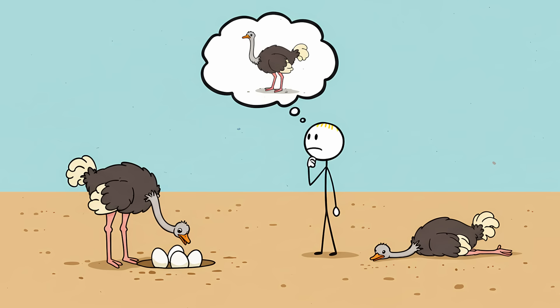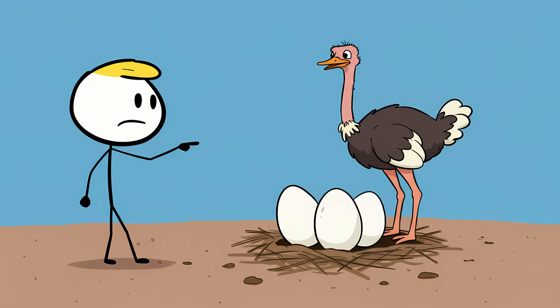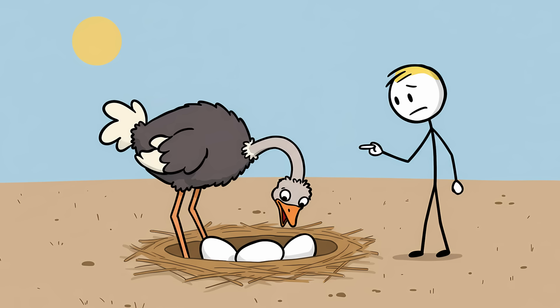The myth likely comes from a misunderstanding of a few different ostrich behaviors. Ostriches dig shallow holes in the dirt to use as nests for their eggs, which are, by the way, enormous. Several times a day, the parent ostrich will use its beak to turn the eggs in the nest. From a distance, this looks a lot like it's sticking its head into the ground.